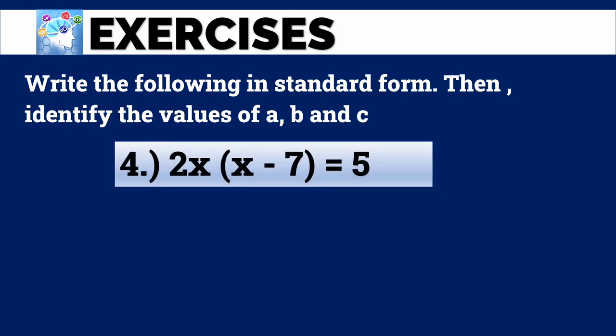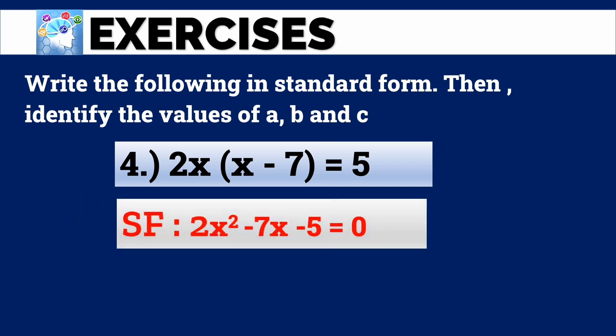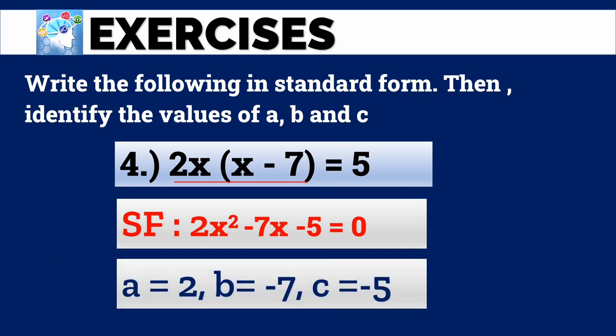Last exercise: 2x(x - 7) = 5. The answer is 2x² - 7x - 5 = 0. Remember, this is in factored form, so we get the product first using the distributive property, then arrange into standard form. A is 2, B is negative 7, and C is negative 5.